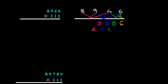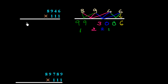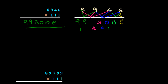Then adding two numbers: 8 plus 9 is 17 plus 2 carry is 19 — write 9, carry 1. And finally 8 plus 1 is 9. So the result of 8946 × 111 is 993,006.